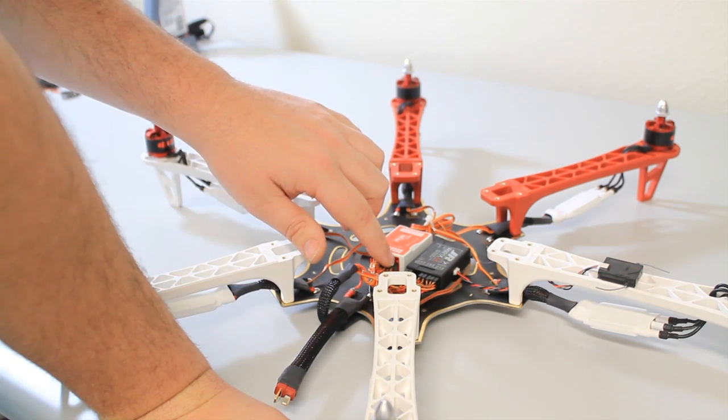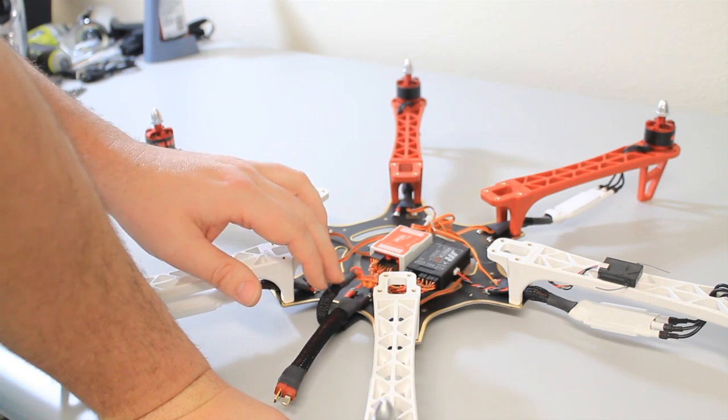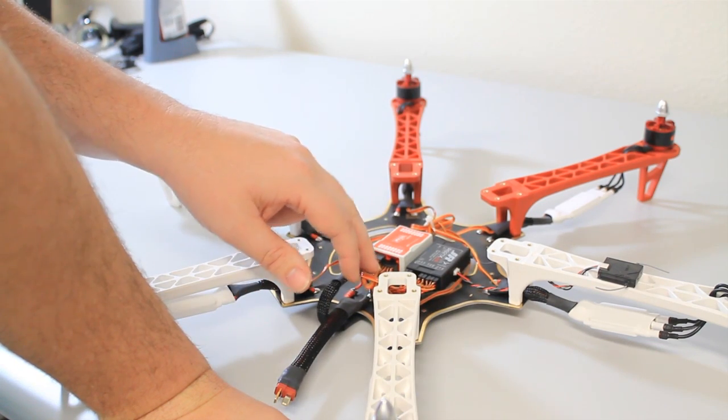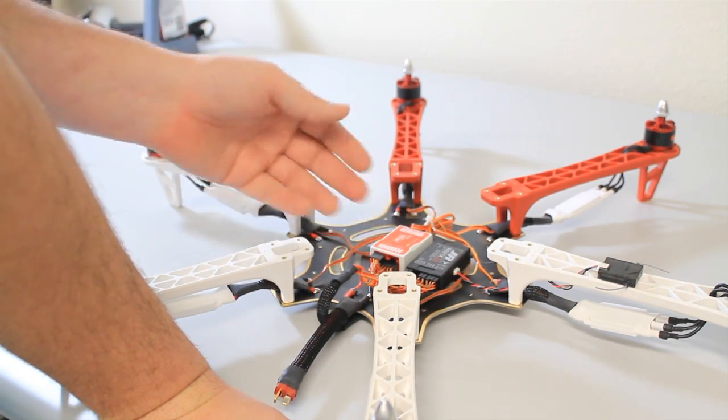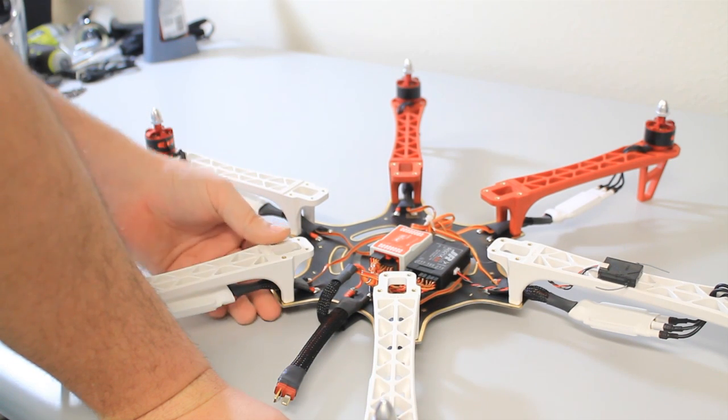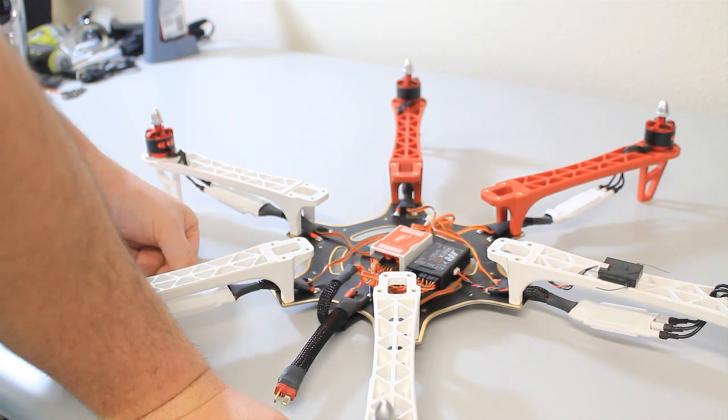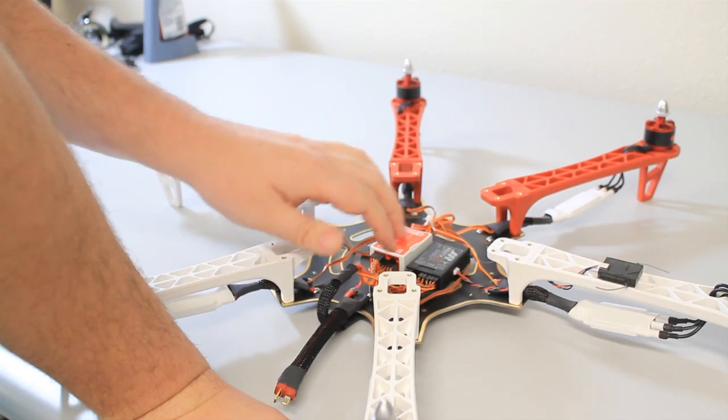And the last one, X3, is going to be your input from your LED module. That's going to control your LED module, let it know when you have lower battery voltage and stuff like that.